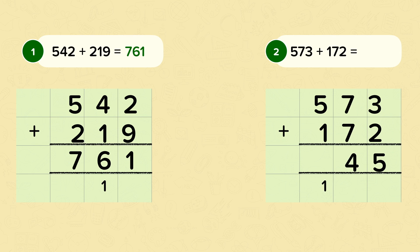Then add up the hundreds. Five, add one, add the one that you've exchanged, is seven. Well done if you got seven hundred and forty five.